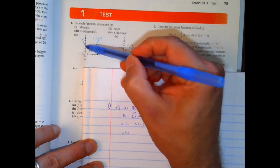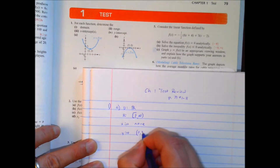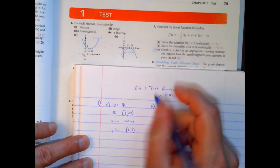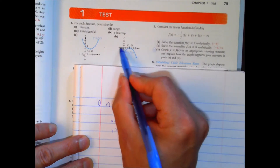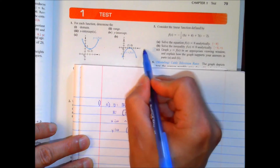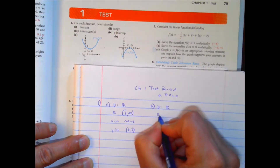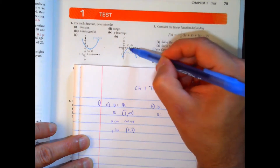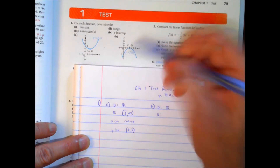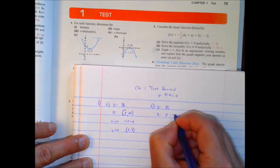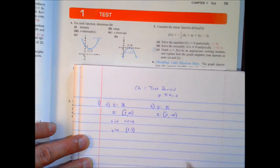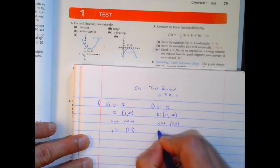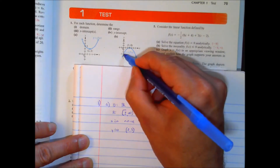The y-intercept is at 3. Part B — a different graph, but finding the same things. Our domain keeps going in both directions, so it's all real numbers. Our range: we have a y of 0 here; there are no y's greater than that, and it goes to negative infinity. So y is from 0 to negative infinity, including 0. The x-intercept is at (3, 0), and the y-intercept is at (0, negative 3).